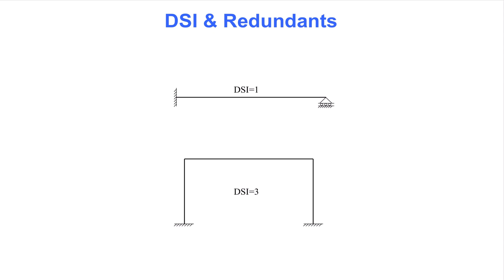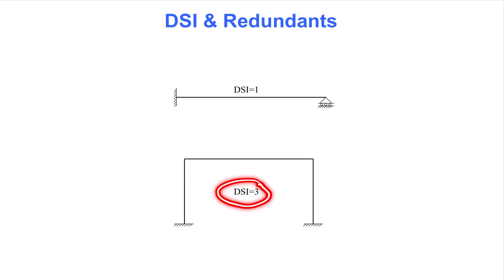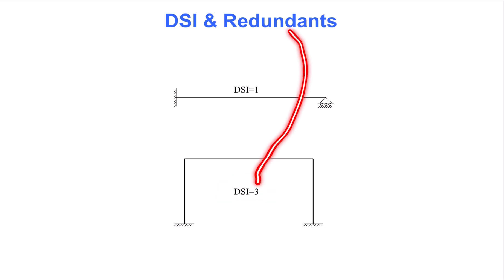We use the word redundant for that surplus force. For this beam, which has DSI equal to one, we will have one redundant. The frame shown below has a degree of static indeterminacy equal to three, meaning we need to specify three redundants. Unfortunately, there is no unique answer to the question of what specifically those redundant forces are.